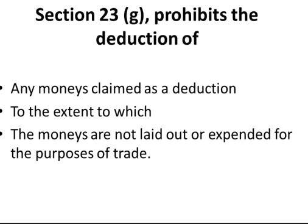Section 23 works to prohibit the deduction of any monies claimed as a deduction to the extent to which the monies are not laid out or expended for the purposes of trade. All this is trying to do is reign in Section 11 — Section 23 reigns in Section 11.